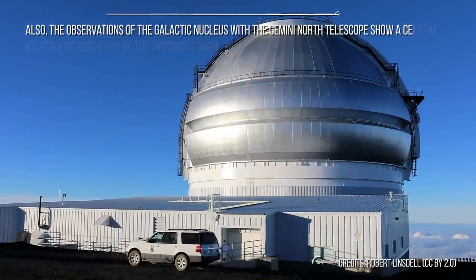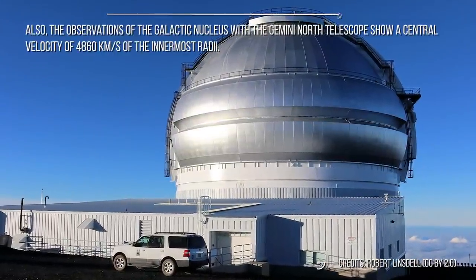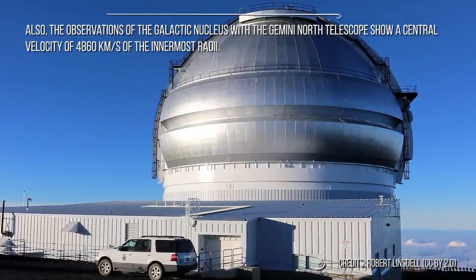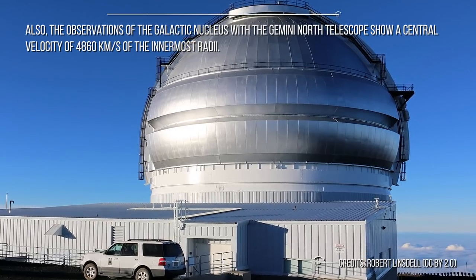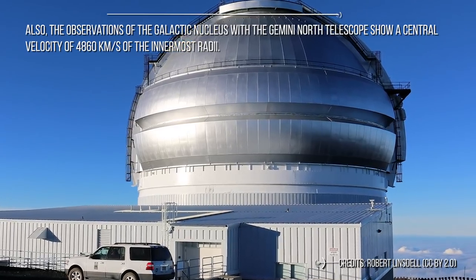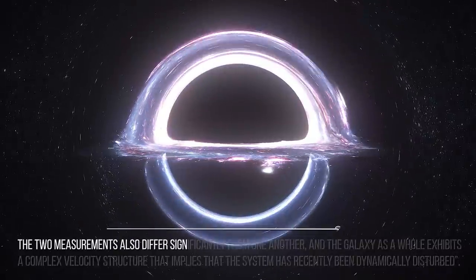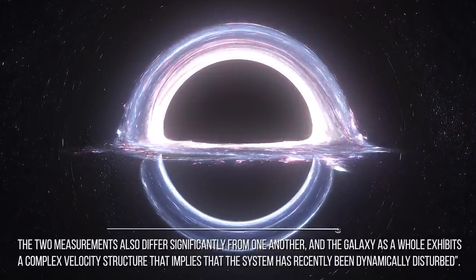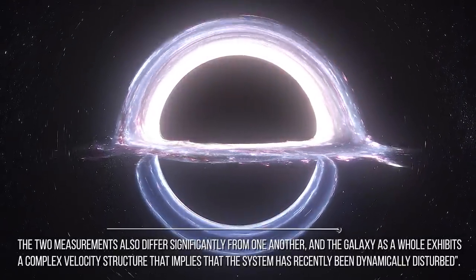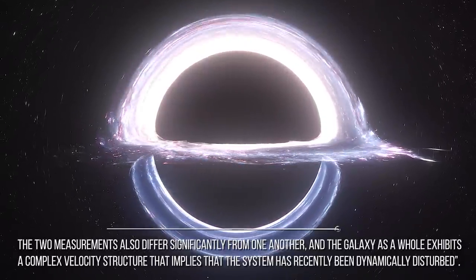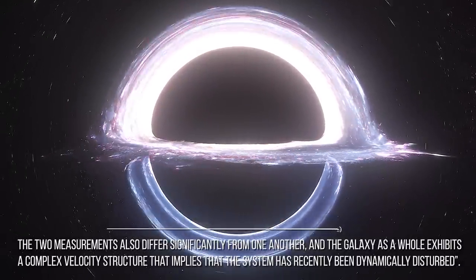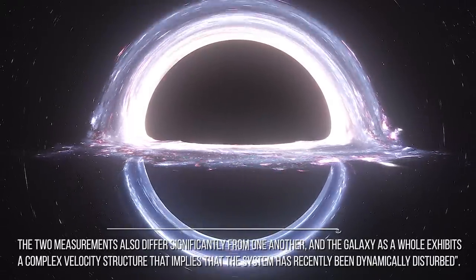Also, the observations of the galactic nucleus with the Gemini North Telescope show a central velocity of 4860 km per second of the innermost radii. The two measurements differ significantly from one another, and the galaxy as a whole exhibits a complex velocity structure that implies the system has recently been dynamically disturbed.